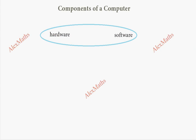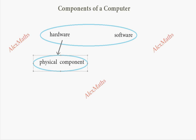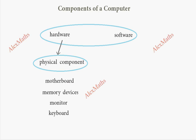In the hardware, there are physical components like the motherboard, memory devices like hard disk, output devices like monitor, and input devices like keyboard. So, these are the physical components at the hardware level.